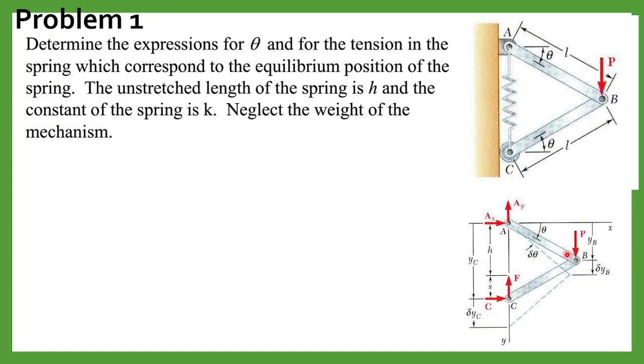As you can see, under the action of this force P, this mechanism will move to this position which is shown by this dashed line. We have displacement of point B. If this is YB, then this displacement is delta YB.